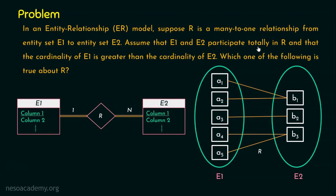So you can see the lines are there for every entity. Let's confirm whether it is a many-to-one relationship. Yes, this is exactly a many-to-one relationship. If you still need clarity, I would request you to watch my previous lecture to gain better understanding about mapping cardinalities. Here the mapping cardinality is many-to-one, and that is why E1 and E2 are related like this.